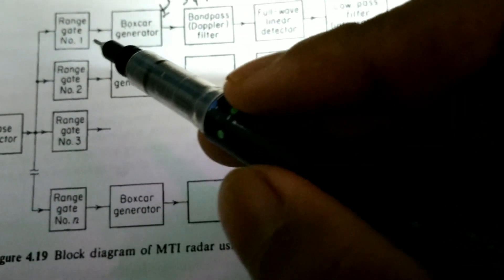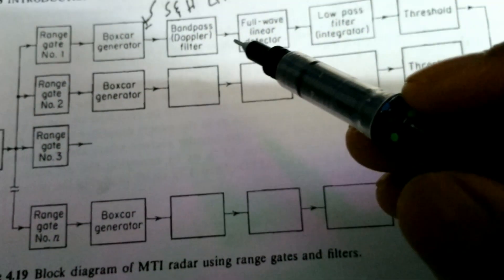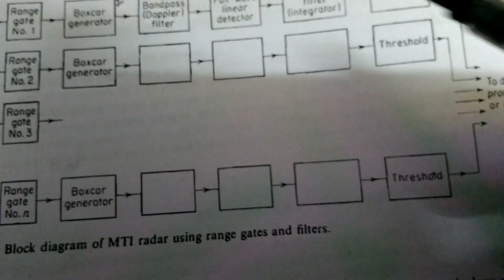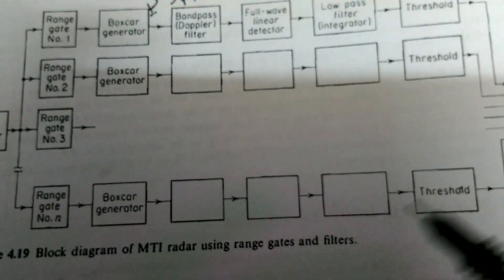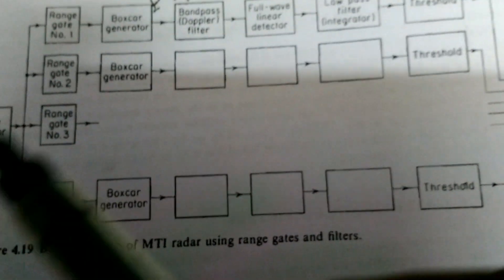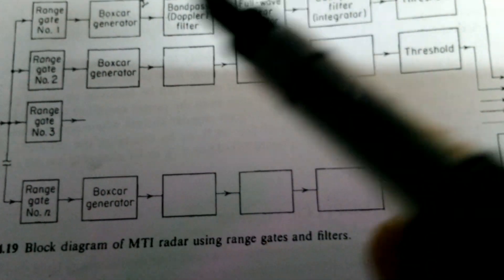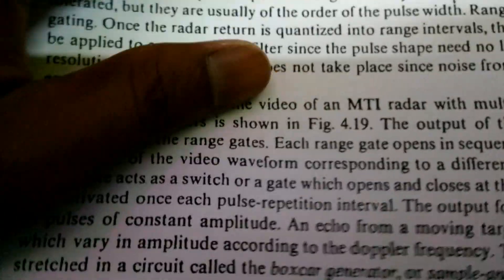The gate allows the output of the phase detector through at the correct time. The signal is then sampled and held, passed through a Doppler bandpass filter, then through a full-wave linear detector, then integrated with a low-pass filter, then to a threshold circuit, and finally to data processing. Not only time-domain filters but also frequency-domain filters are used — the phase detector output is divided into range gates, passed through a sample-and-hold (box car generator), then through the Doppler bandpass filter chain.